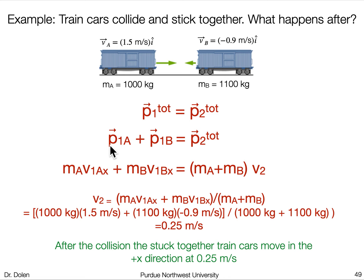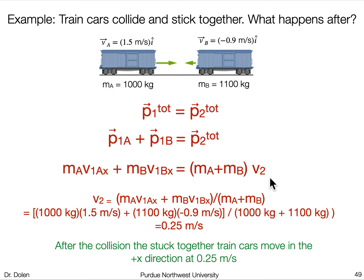Momentum is mass times velocity. So the momentum of object A at time 1 is the mass of A times the velocity of object A at time 1. I'll move from using a vector to an x-coordinate since I only have motion in x, so I can reduce this to a one-dimensional problem. The momentum of object B at time 1 is just the mass of B times the velocity of B at time 1. The total momentum at time 2 has the two cars moving with the same velocity since they're stuck together, with a combined mass of A plus B. My only unknown here is V2 — the velocity of the stuck-together train cars after the collision.